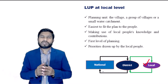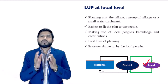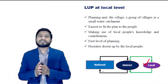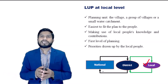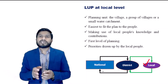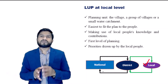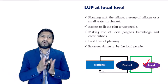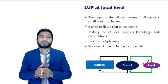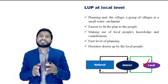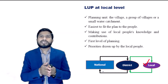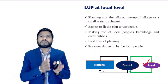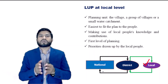Land use planning at local level: the local level unit of planning may be the village, a group of villages, or a small watershed. At this level, it is easiest to relate the plan to the people, making use of local people's knowledge and their contributions. Where planning is initiated at the district level, the programs of work to implement change in land use or management have to be carried out locally.